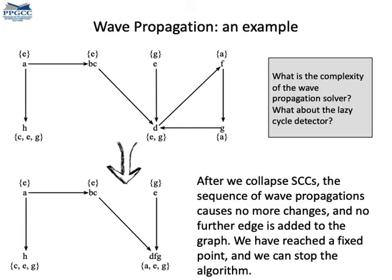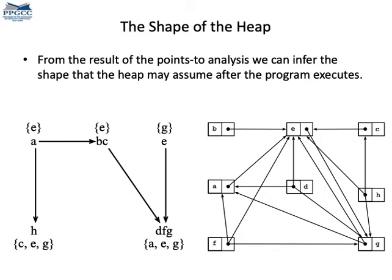A second question is, what is the meaning of this graph here that we obtain after running the points-to analysis? Maybe that's the most important question because it gives us the semantics of points-to analysis. Well, this graph is a representation of the heap. It shows us a conservative estimate of all the possible ways in which pointers can point to memory.